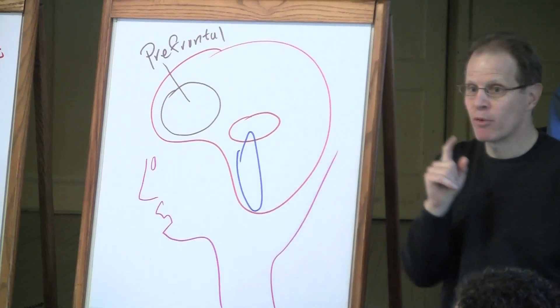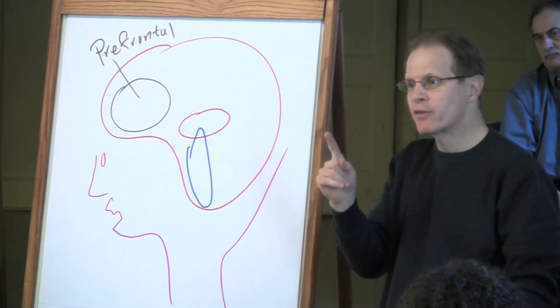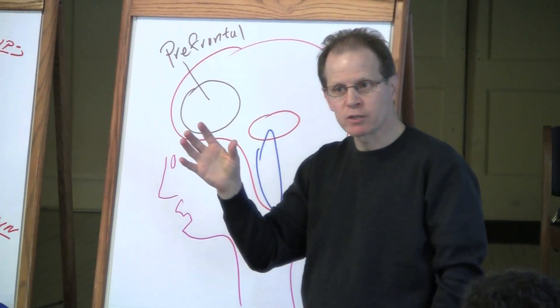What I want you to consider in terms of take home point number seven is this difference between personal distress and empathic concern may make a huge difference with climate change behavioral alterations.